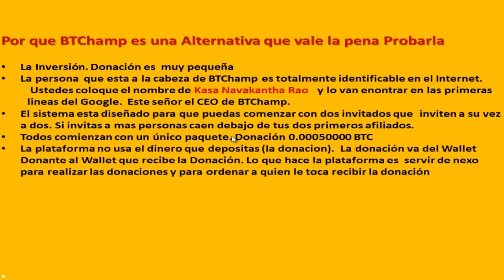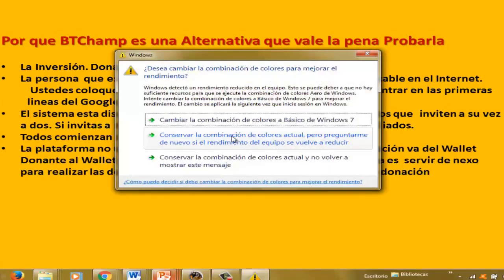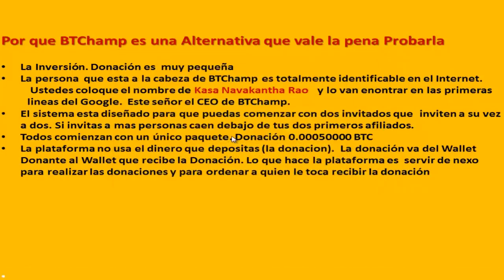La plataforma no usa el dinero que nosotros depositamos. La donación que nosotros realizamos no llega a BTC Champs, no llega a la empresa. La donación va de wallet a wallet, de persona a persona. Si usted quiere hacer una donación, va a ir desde su billetera hacia la billetera que le va a indicar la plataforma. No necesariamente puede ser quien me esté donando a mí, sino a la persona que le indique la plataforma. Lo que hace la plataforma es servir de nexo para realizar las donaciones y priorizar cuál es la persona a la que usted tiene que realizar la donación.